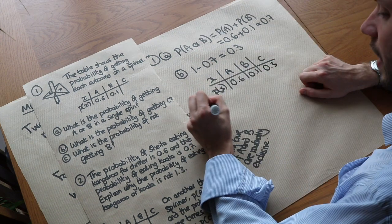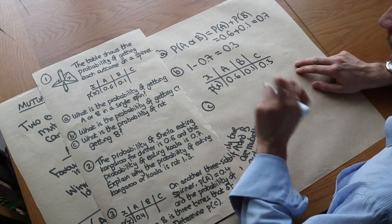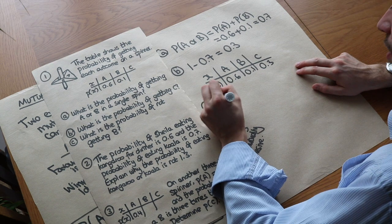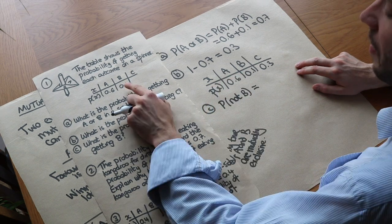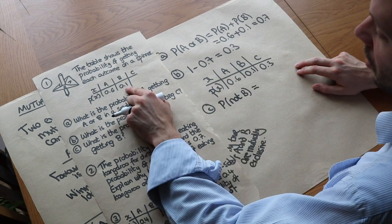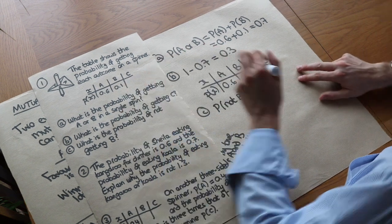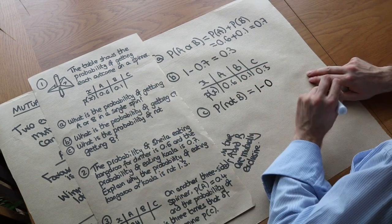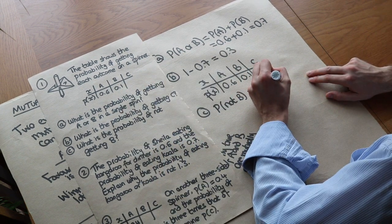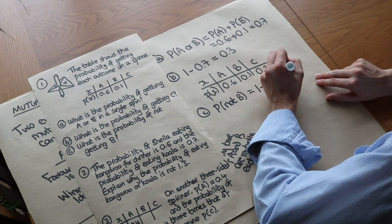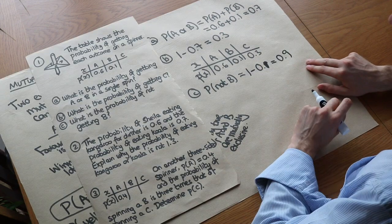Part C: what is the probability of not getting B? There is a 0.1 chance of getting B, so the probability of not getting B is 1 minus 0.1, which equals 0.9.